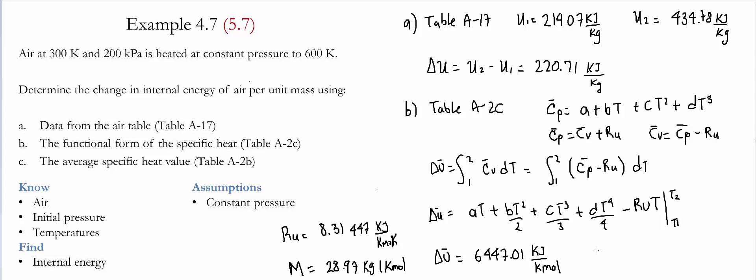Now we need to convert the internal energy from molar base into per unit mass. We use the relationship delta U equals delta U molar base divided by the molecular weight. The molecular weight of air is 28.97 kilograms per kilomole. Therefore, the change of internal energy per unit mass is 222.5 kilojoules per kilogram.